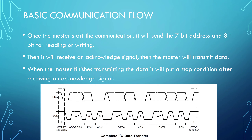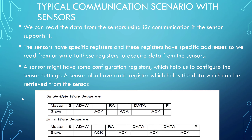Once the acknowledgement signal is received, we have the specific device and are communicating with it — all other devices ignore the data because they don't have this address. The master then transmits data bytes, receiving an acknowledgement after each byte. On each clock pulse, one bit is transmitted. At the end of transmission, the master sets the stop condition and the I2C transfer procedure is complete.